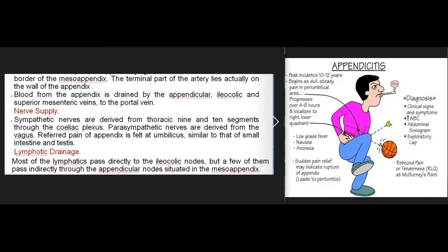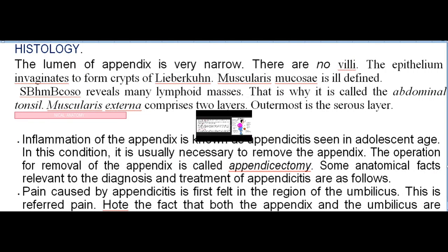Blood from the appendix is drained by the appendicular, ileocolic, and superior mesenteric veins to the portal vein. Sympathetic nerve supply is from thoracic ninth and tenth segments through the coeliac plexus; parasympathetic from the vagus. Referred pain of the appendix is felt at the umbilicus, similar to that of the small intestine and testis. Most lymphatics pass directly to the ileocolic nodes; a few pass indirectly through the appendicular nodes in the mesoappendix.